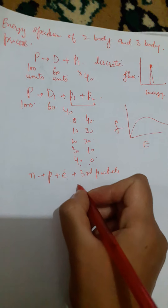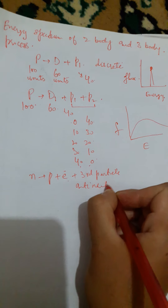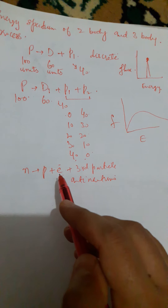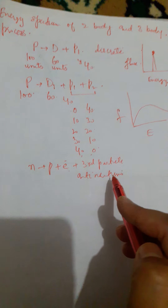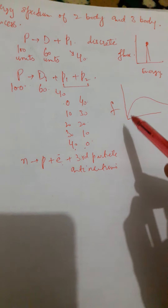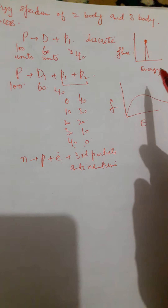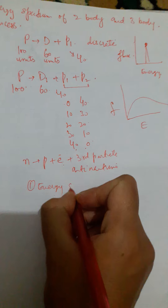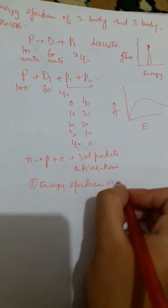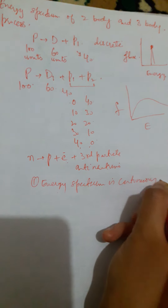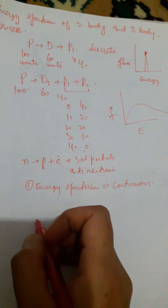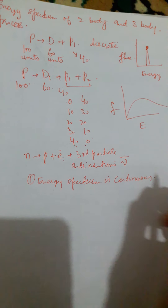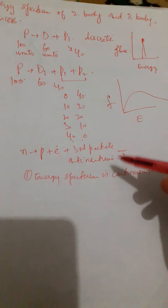That third particle was named as antineutrino. Therefore, the remaining energy gets distributed between this electron and the antineutrino. So the energy spectrum in the beta process is continuous and not discrete — that is point number one. The continuous energy spectrum hints that there is a third particle which is emitted, and that is the antineutrino. Antineutrino is written with its standard notation. You know about these particles — mesons, baryons, nuclear particles.